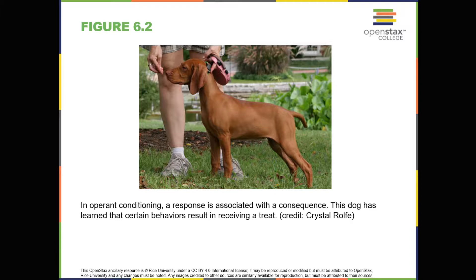Both instincts and reflexes are innate behaviors that organisms are born with. Reflexes are a motor or neural reaction to a specific stimulus in the environment. They tend to be simpler than instincts, involve the activity of specific body parts and systems — for example, the knee-jerk reflex and the contraction of the pupil in bright light — and they involve more primitive centers of the central nervous system, such as the spinal cord and the medulla.